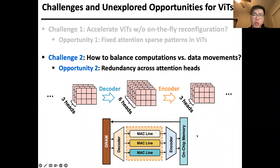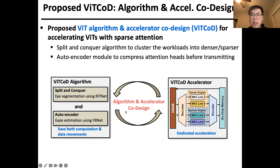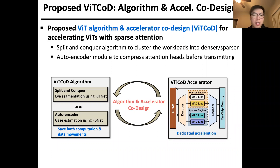Based on those analyzed opportunities specific to VITs, we propose VIT-CoD, a VIT algorithm and accelerator co-design framework for accelerating VITs with sparse attention. VIT-CoD integrates two main ideas: one is the split-and-conquer algorithm to cluster the workload into denser or sparse patterns; another is the autoencoder module to compress the attention heads before transmitting between off-chip memory and on-chip memory. The corresponding accelerator is dedicatedly designed to cooperate with the algorithm.